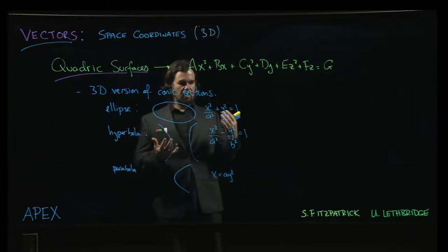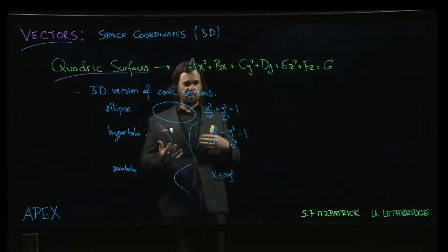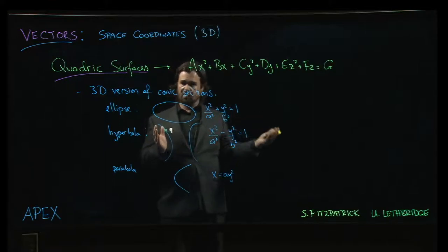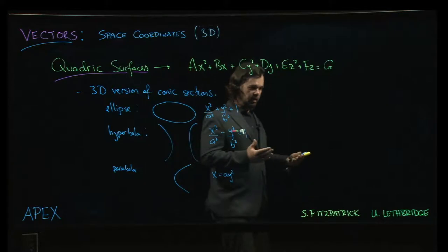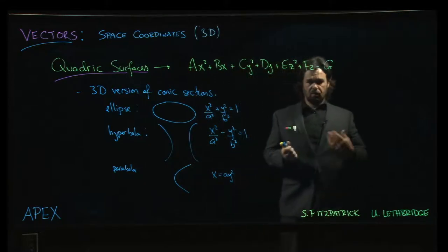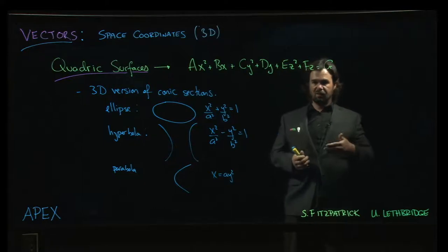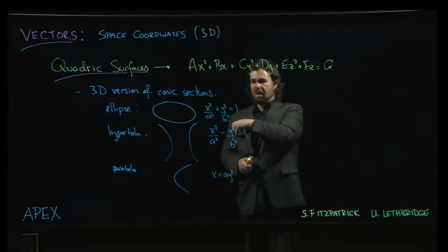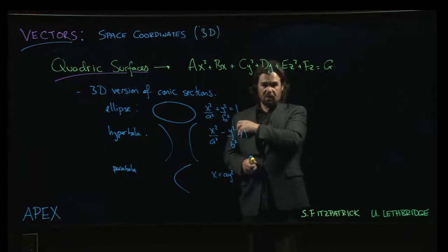If you have those cross terms like xy or yz in there, what you end up with is actually just some rotated version of the quadratic surfaces that we will look at. There are ways to deal with those, but they typically involve a bit of linear algebra. They involve eigenvalues and diagonalization and things like that, so they're fun to play with but not what we want to focus on here.